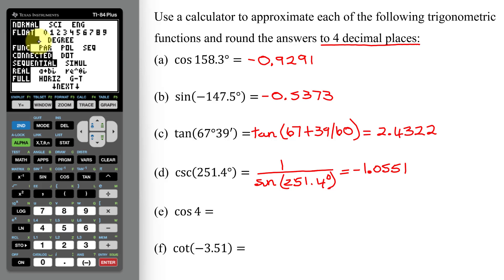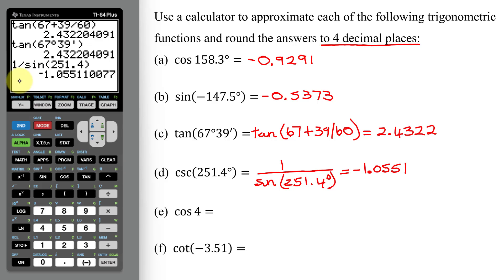So I need to quit the mode. So quit is above mode. So hit second mode. I'm back on my home screen. Now I can find the cosine of 4 radians. Hit enter. Here is my answer. Round to the fourth decimal place. That's the 6. The 4 is not going to change the 6. So my answer is negative 0.6536.